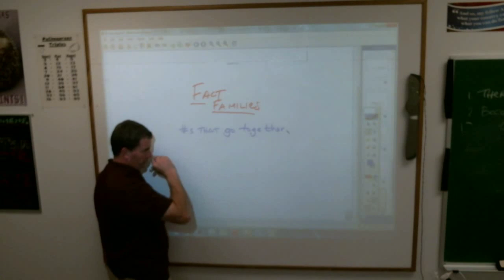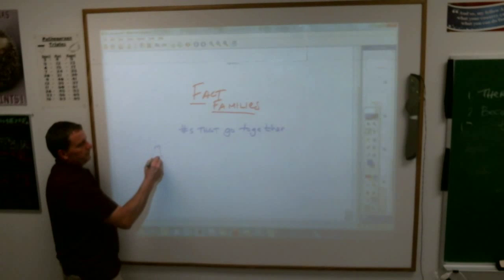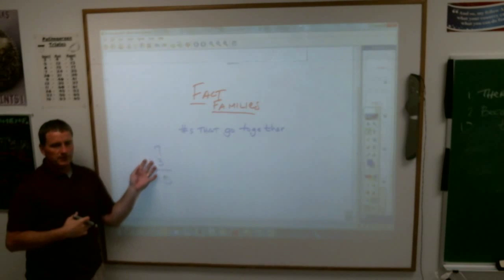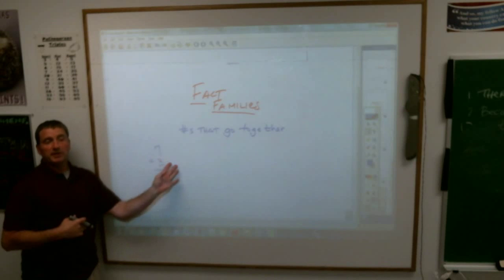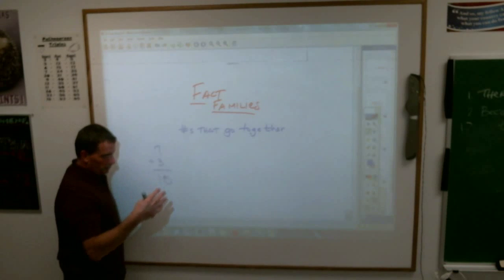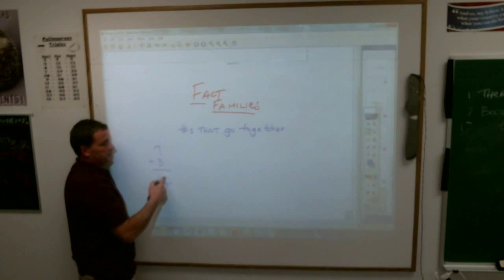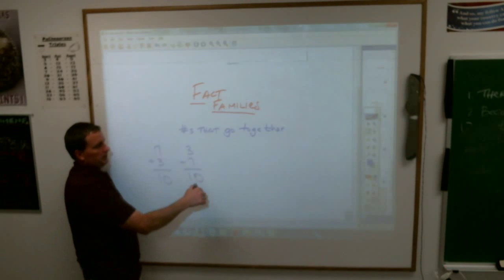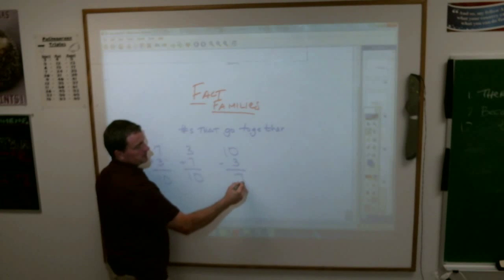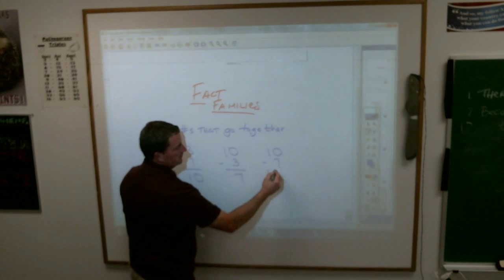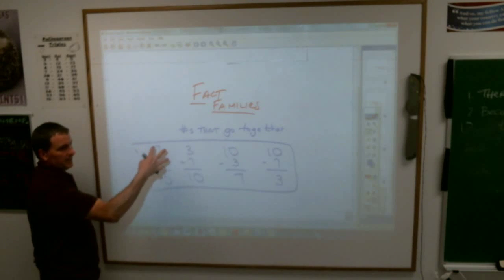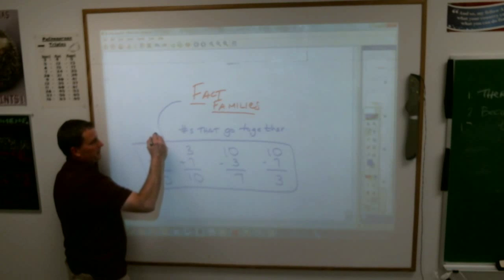Numbers that go together in groups of three. In other words, if you know that 7 plus 3 is 10, using those three different numbers, you can come up with three other problems that are true. Because of the commutative property of addition, if 7 plus 3 is 10, then 3 plus 7 is 10. You get your two addition facts, and from these you can also make two subtraction facts, which would be 10 minus 3 is 7, and 10 minus 7 is 3. This group of different facts that you can make using the same numbers is what we call a fact family.